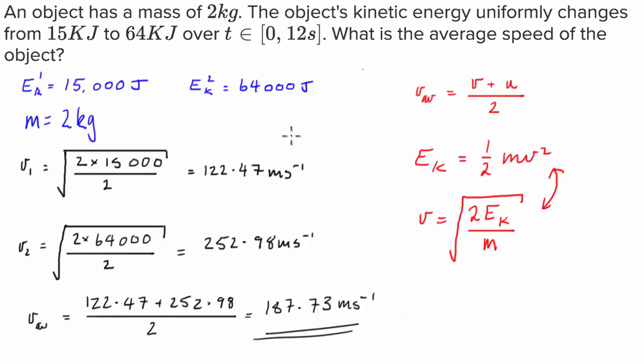So I hope this question helped. It's not a very complicated solution. It's just a matter of rearranging that kinetic energy formula and understanding that because it accelerates uniformly, we can just take a straight arithmetic mean of the two velocities. But yeah, if the video helped, give it a thumbs up, subscribe to my channel. It helps me out a little bit. And until next time guys, enjoy your studies.